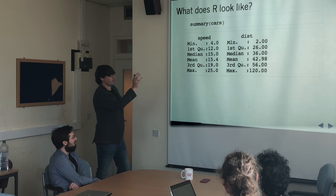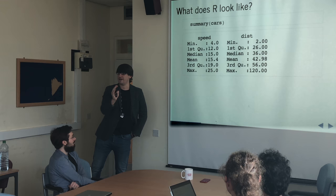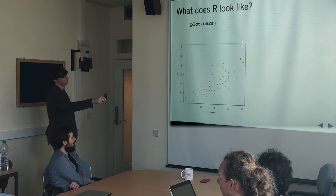Everything is vectorized — lots of things are vectorized. What we can do is ask for a summary, and you get summary statistics out for each of the vectors in that data frame. And we can just throw in a plot and it gives us the correlation between the two.